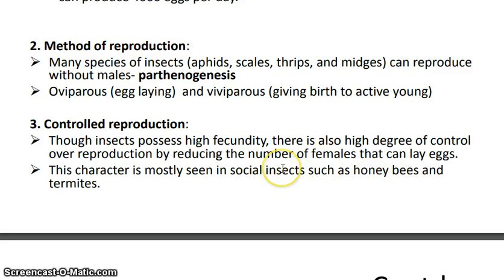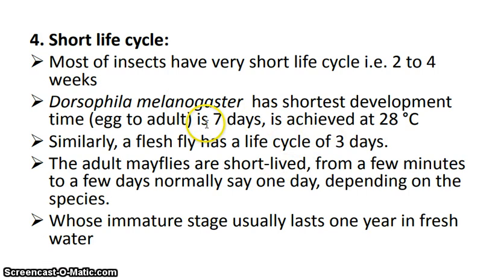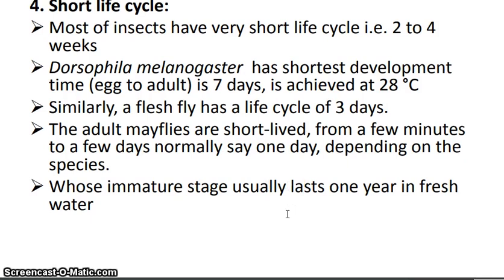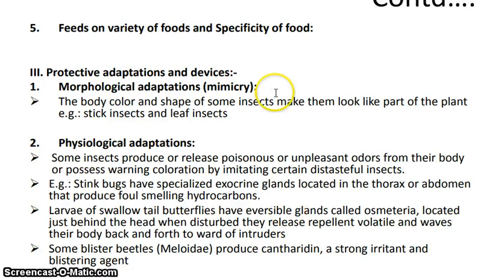Insects have short lifespans — mostly two to four weeks. Drosophila melanogaster, the fruit fly, has a lifespan of seven days, and similarly the flesh fly has a life cycle of three days. Adult flies are short-lived, and life cycles vary from a few days to a few weeks, though some aquatic stages may last one year in freshwater.